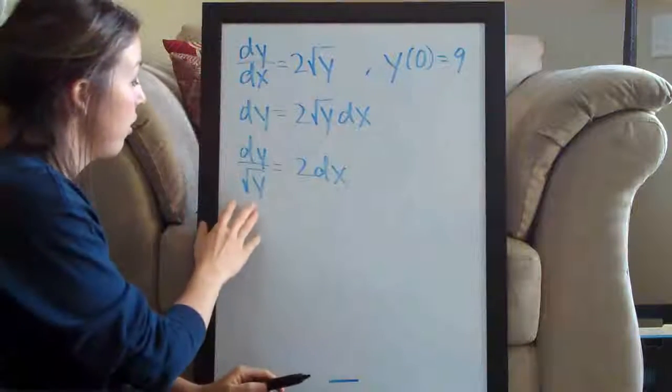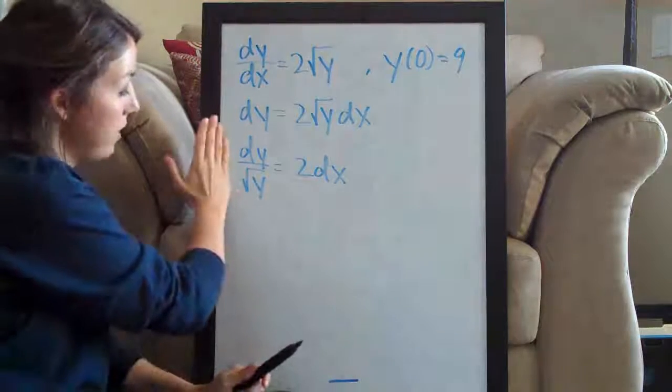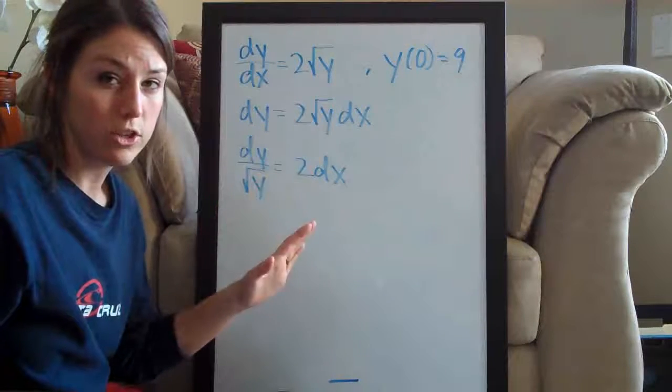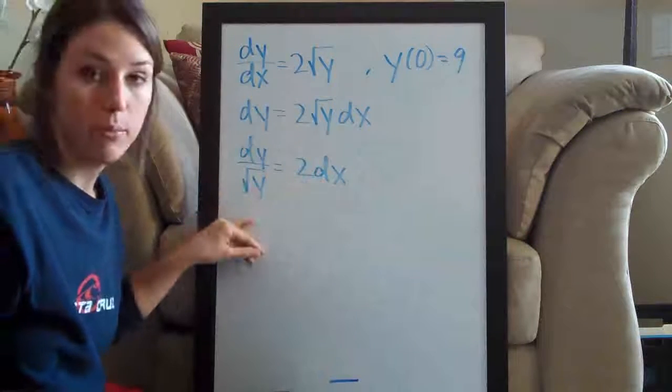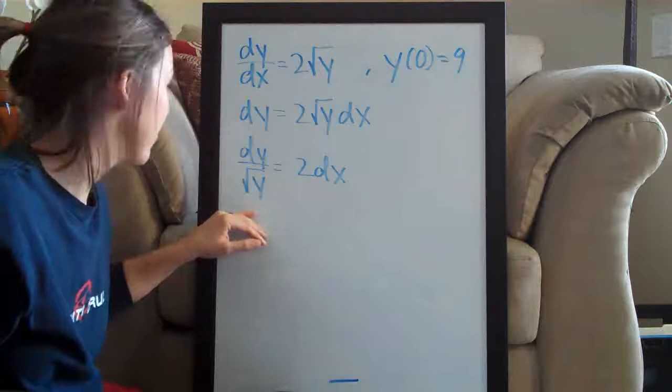So now we have separated the variables. We have y's on the left side, we have x's on the right side. That's what makes this a differential equations or separable equations problem—we need to separate the variables in order to solve it.